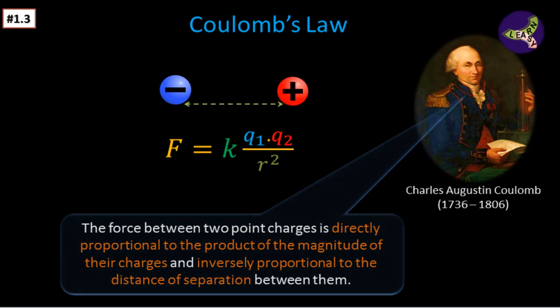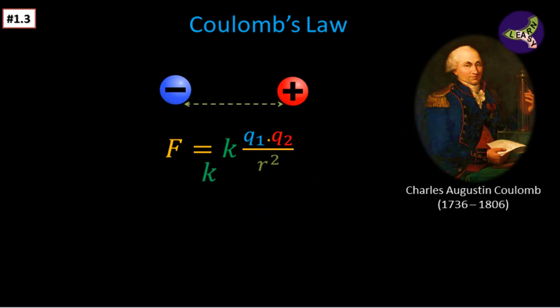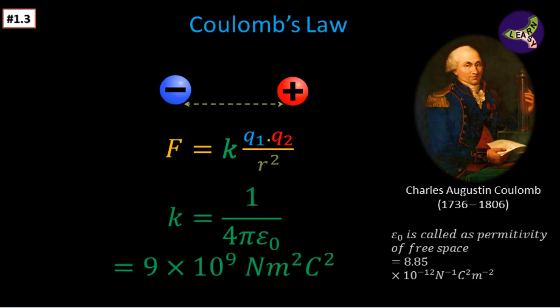Now we can see that the value of K is K equal to 1 by 4 pi epsilon naught, and the value of 1 by 4 pi epsilon naught is 9 into 10 to the power 9 newton meter square per coulomb square.